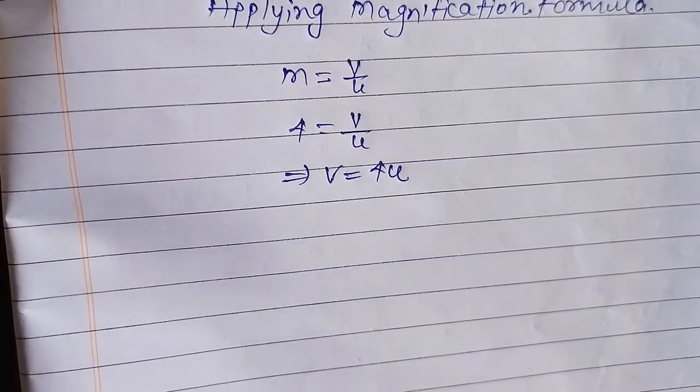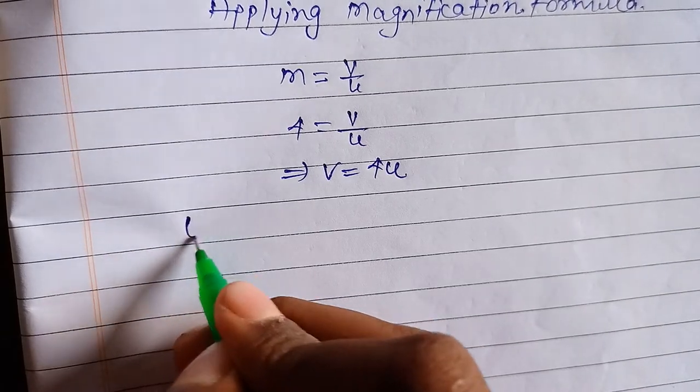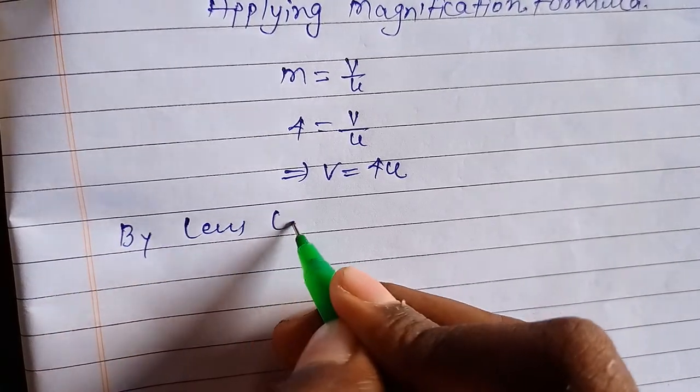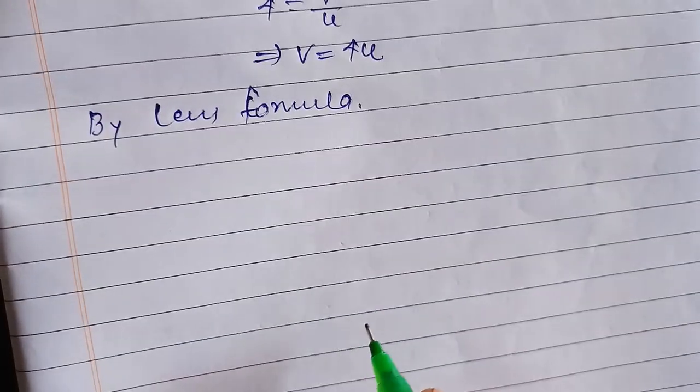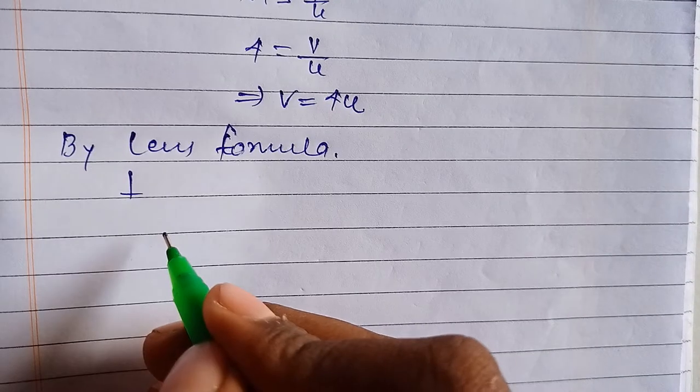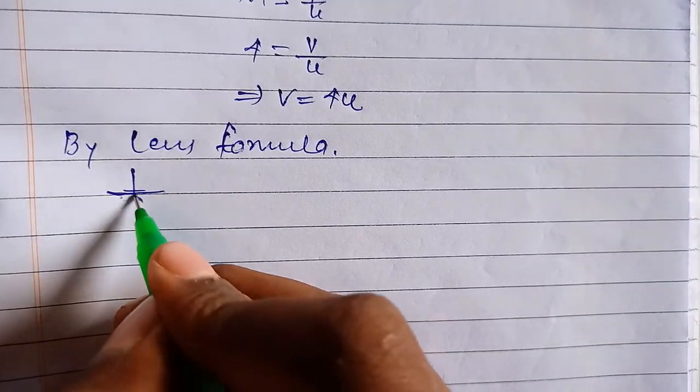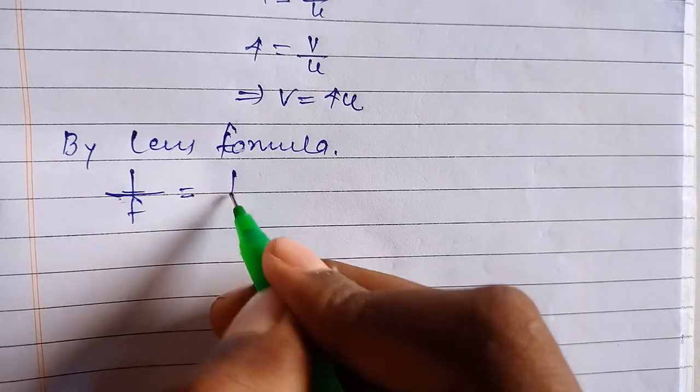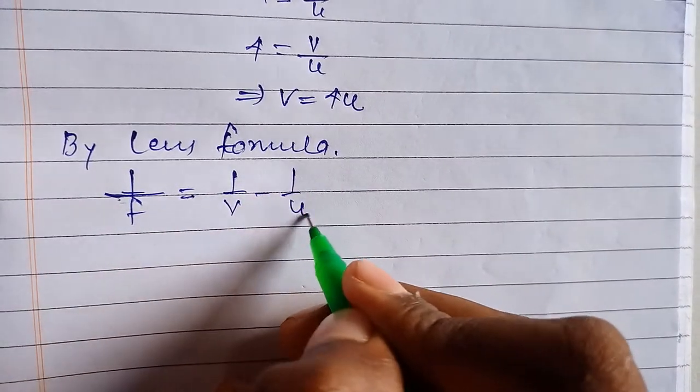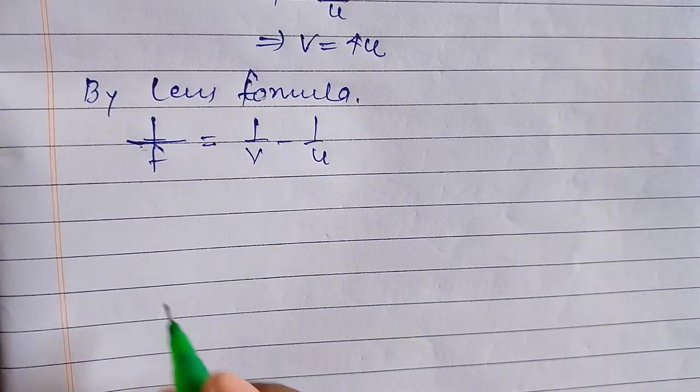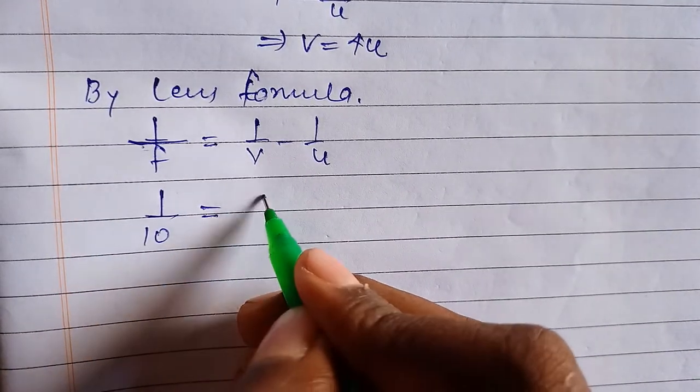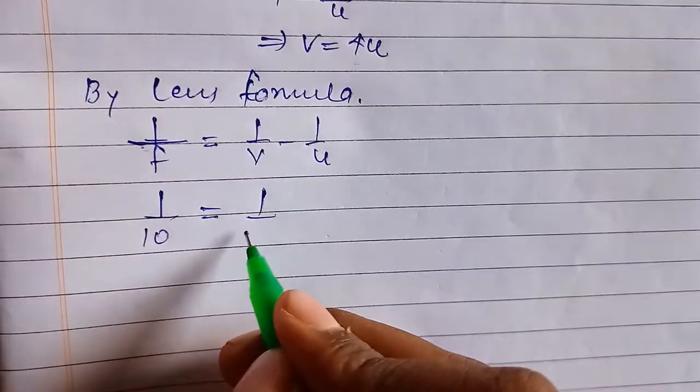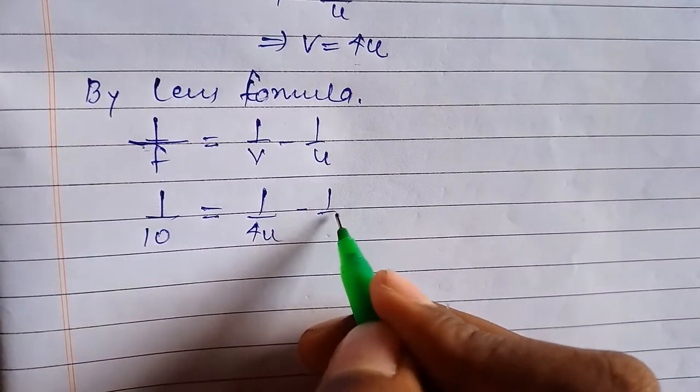And by lens formula, 1 by f equal to 1 by v minus 1 by u. So 1 by f is equal to 10, equal to 1 by v, 1 by v is 4u, v is 4u, minus u.